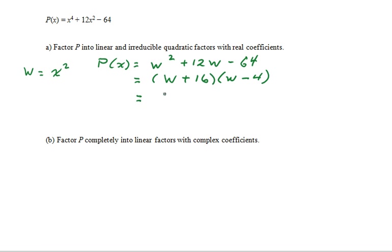Now we back substitute x squared for w. The x squared plus 16 is irreducible in the set of real numbers. So, we just recopy it, but we factor the difference of squares into x minus 2 times x plus 2. And this is where we stop in part a. Linear and irreducible quadratic factors with real coefficients.